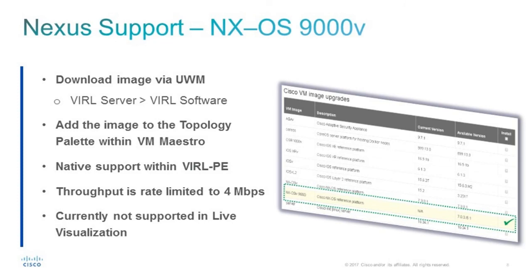If you tried the NX-OSv 9000 on the VIRL 1.2 release, you know it used to require 8 gigabytes of RAM per node. That has now been reduced — the new image defaults to 4 gigabytes of RAM. Running at 4GB will limit some traffic tables and disable one set of features, but everything else behaves the same. As long as you don't need that separate feature set, you'll be able to run all your NX-OSv 9000 nodes with the smaller flavor at 4 gigabytes per node. Note that NX-OSv 9000 is not currently supported in live visualization, but this should be fixed in the next maintenance release.